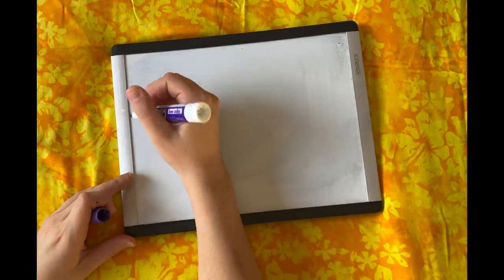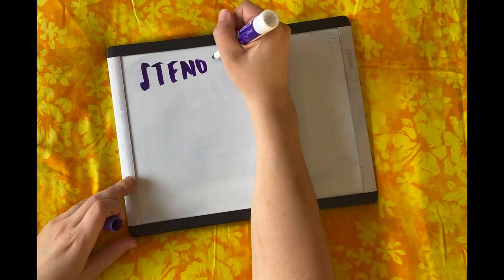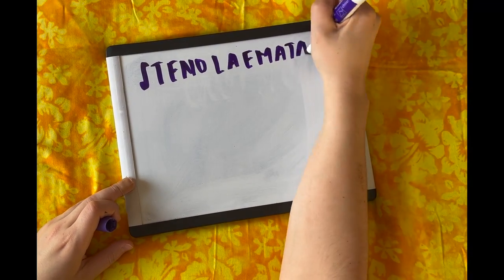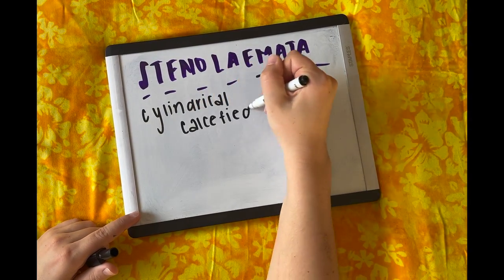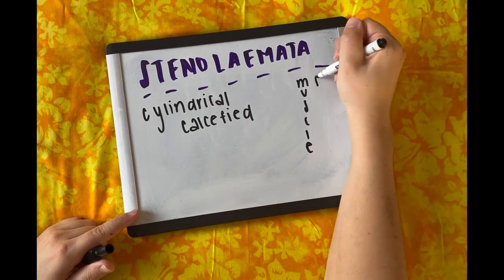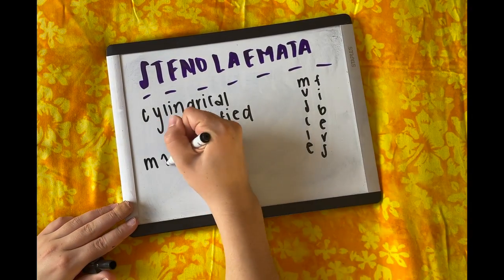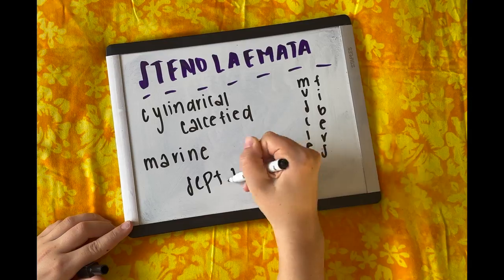The second major group found in the Bryozoa taxon is the Stenolaemata group, which has the following characteristics: they are cylindrical, have a calcified body wall with no muscular fibers, and live in a marine environment and reproduce by the division of the septa.